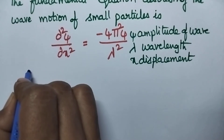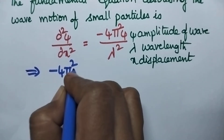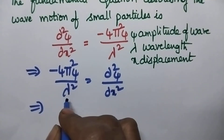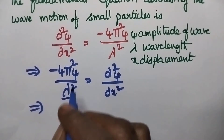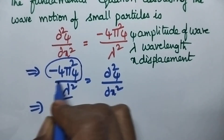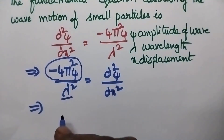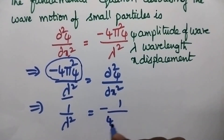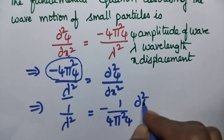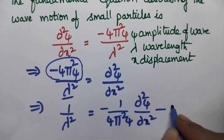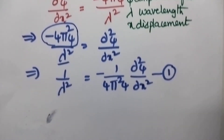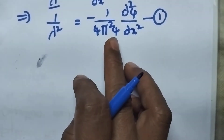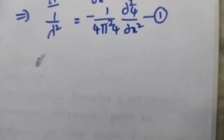By rewriting this expression, we get −4π²ψ/λ² = ∂²ψ/∂x². That implies we need to write the expression in terms of λ². Migrating the term to the right-hand side, it becomes: 1/λ² = −(1/4π²ψ) · ∂²ψ/∂x². This is equation number 1.